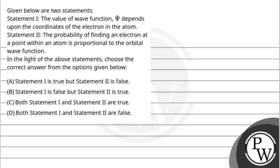Let's read the question. The question says, given below are two statements. Statement 1 is: the value of wave function psi depends upon the coordinates of the electron in the atom. Statement 2: the probability of finding an electron at a point within an atom is proportional to the orbital wave function. In the light of the above statements, choose the correct answer from the options given below.